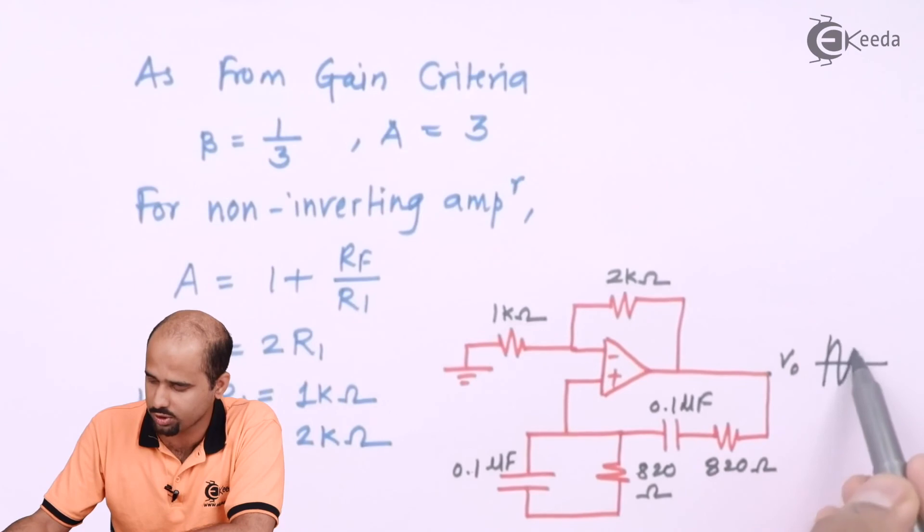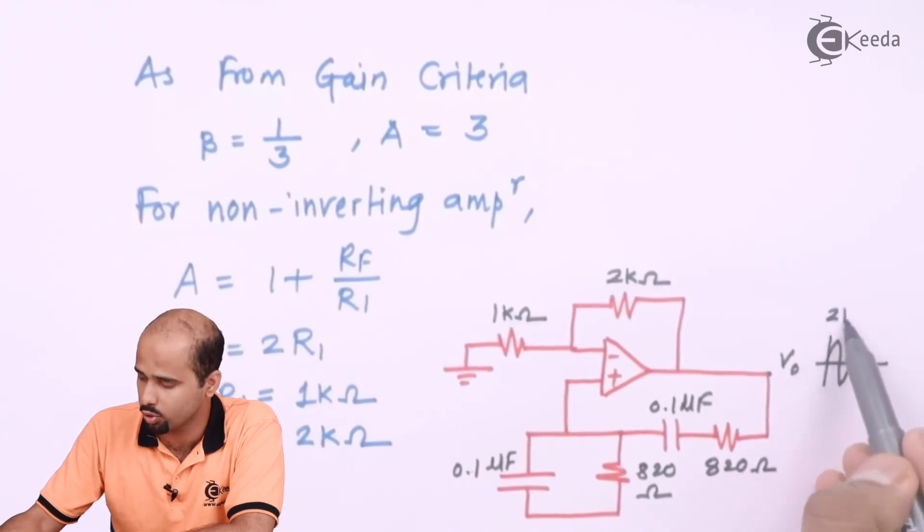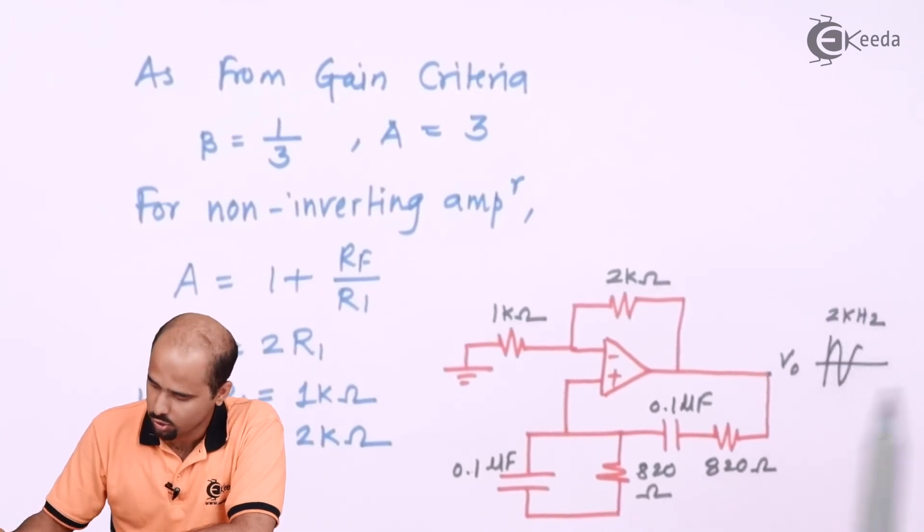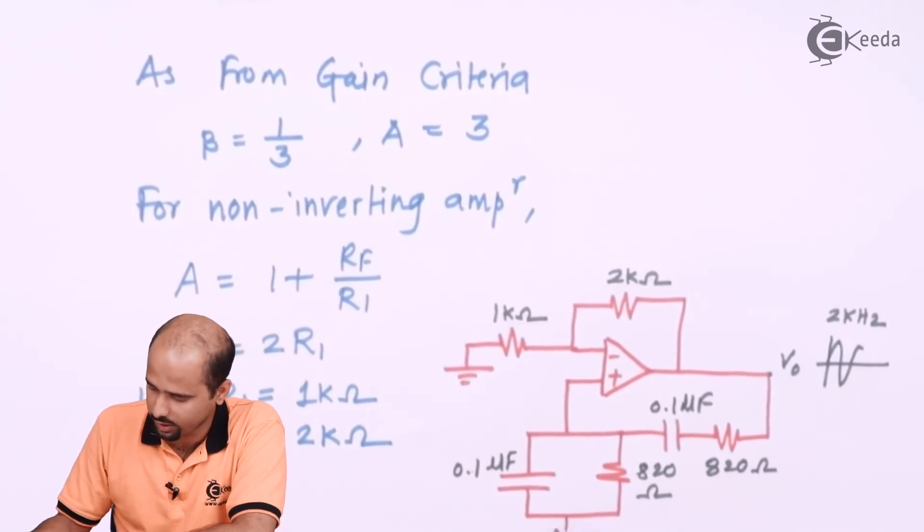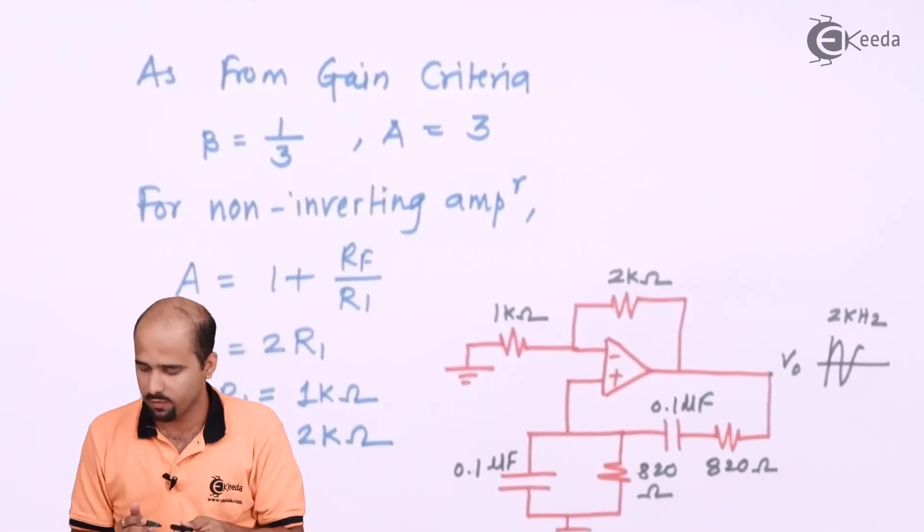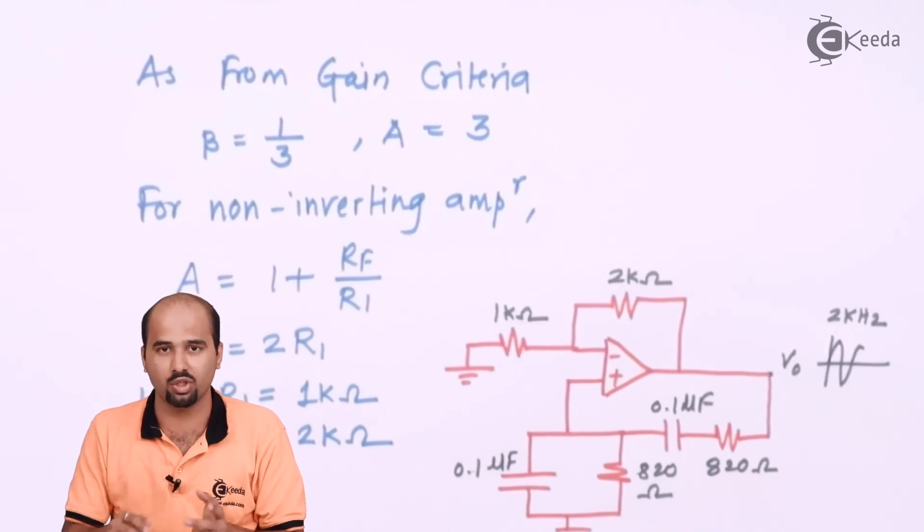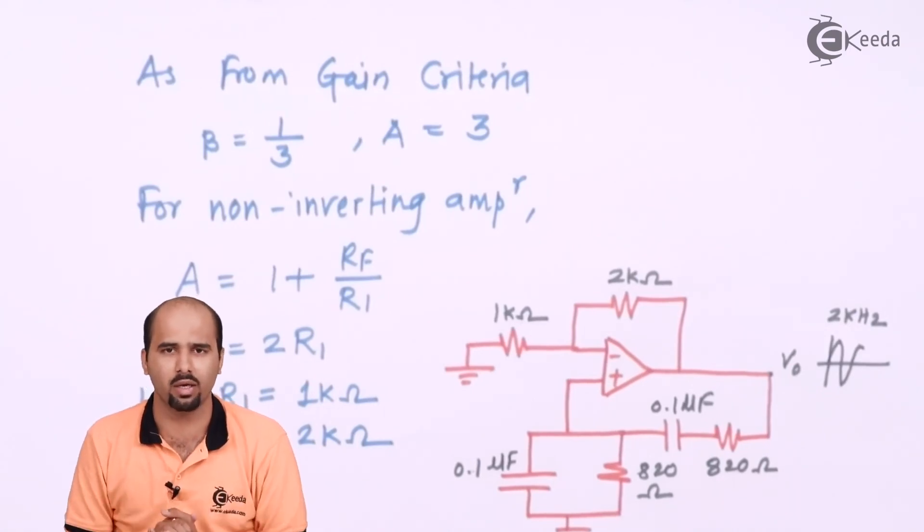And here we will be getting the value of V0 which gives you the sustained oscillation of value 2 kilohertz. Obviously we have to mention that it's nothing but the ground connection. So this is how we have formed the Wien bridge oscillator in a very simple manner.